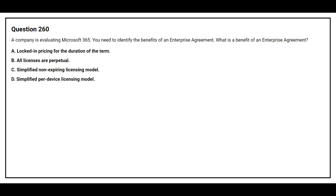Question number 260. A company is evaluating Microsoft 365. You need to identify the benefits of an enterprise agreement. Option A: locked-in pricing for the duration of the term. Option B: all licenses are perpetual. Option C: simplified non-expiring licensing module. Option D: simplified per-device licensing module. The correct answer is option A, locked-in pricing for the duration of the term.